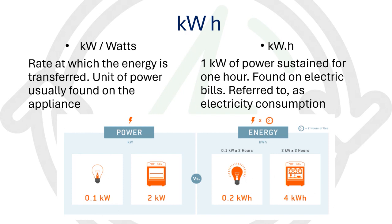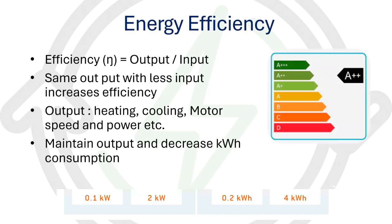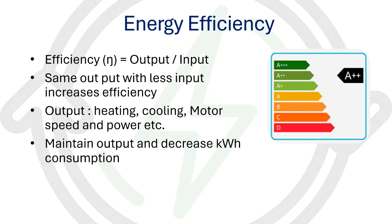Now we know what energy is, how it is being charged, and the two factors it depends upon: kilowatt and hours. Now what is efficiency? It is the output that we get by the input that we inject. If we have to make anything more efficient, we need to minimize the input and maintain the same output. That is what energy efficiency is all about — keeping the same output by decreasing the amount of energy being used.